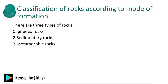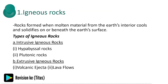We are going to classify rocks according to their mode of formation. There are three types of rocks: igneous rocks, sedimentary rocks, and metamorphic rocks. This is the most important part of this topic — you need to understand the differences clearly.